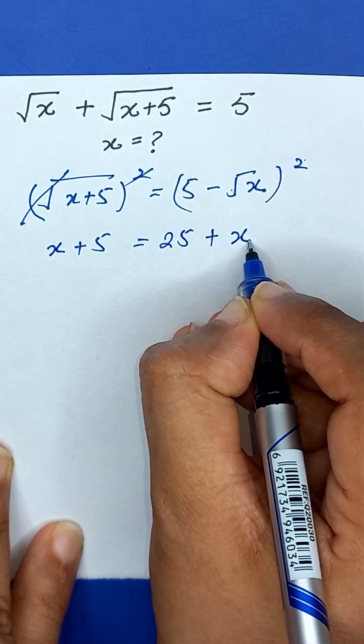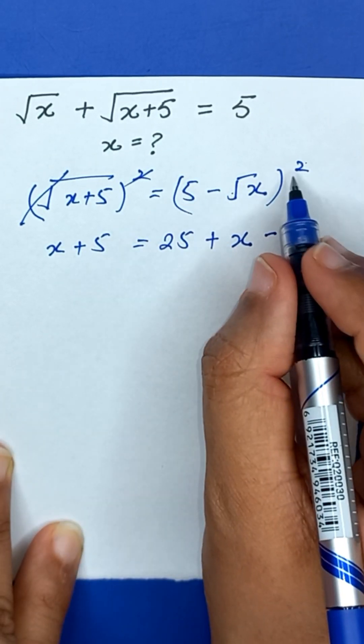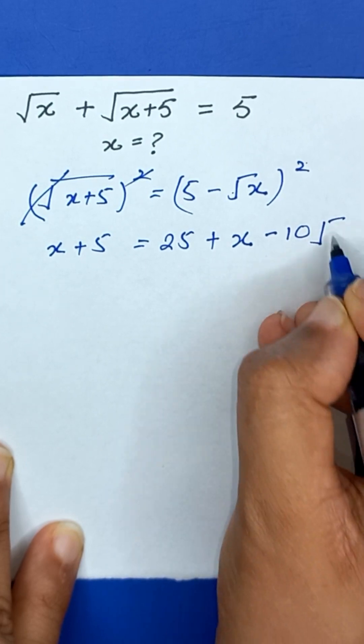This square and square root will be cancelled out and it will be x minus 2ab. So 2 times 5 times square root of x equals 10 square root of x.